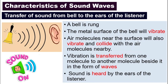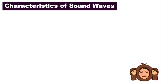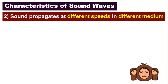This seems like a very long process, but it actually happens very quickly. So that is our first characteristic of sound waves: sound waves require a medium to travel or to propagate. Number two — the characteristic of sound waves is that sound propagates at different speeds in different mediums, meaning in solid, in liquid, and in gas, sound travels or propagates at different speeds.